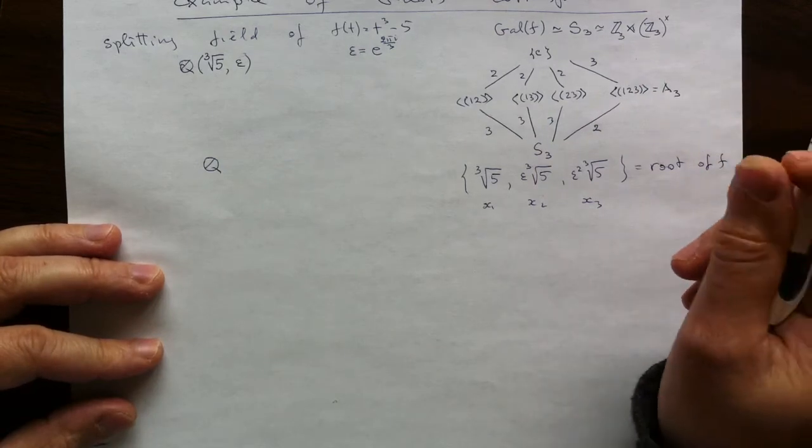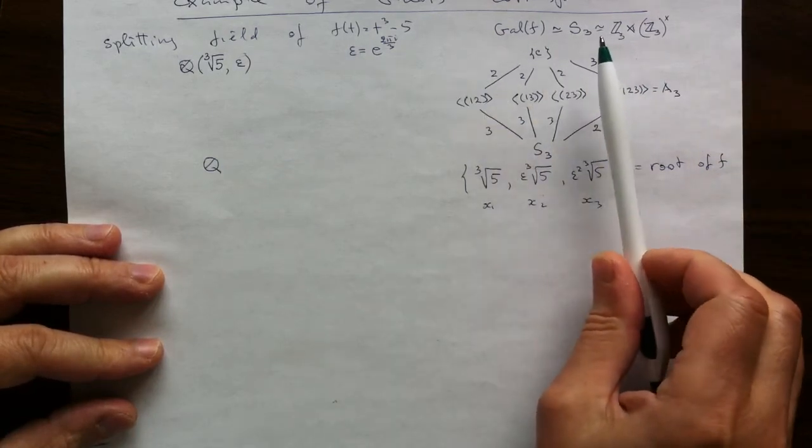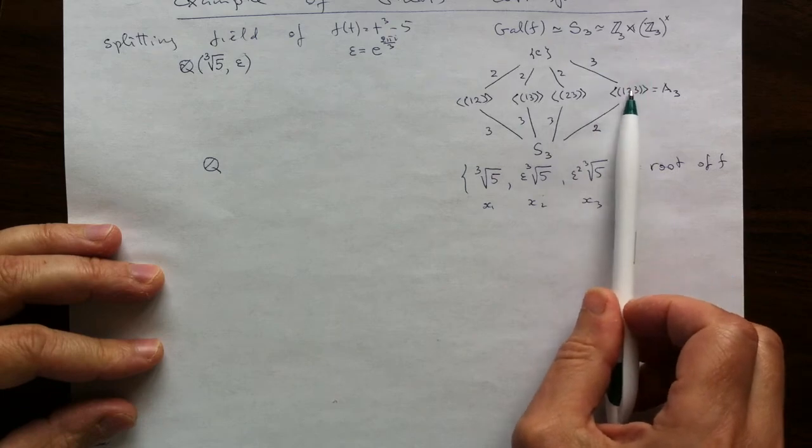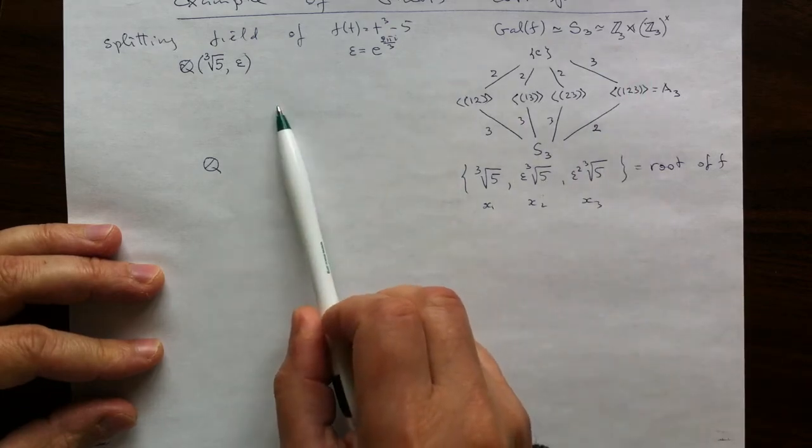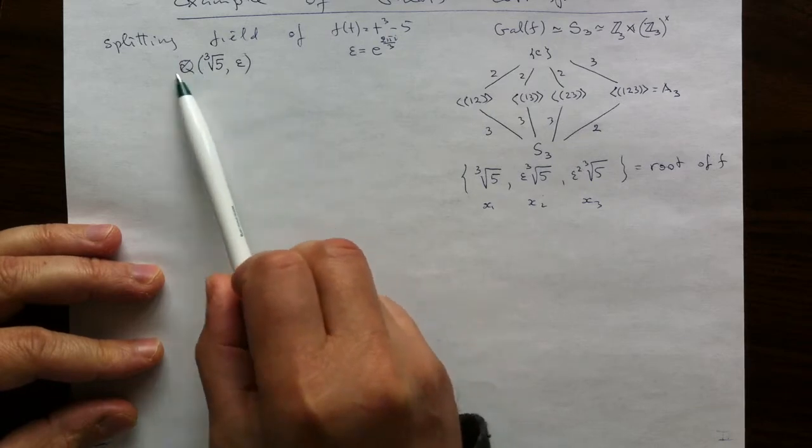Easy recipe, easy to say. According to Galois correspondence, you take a subgroup, and to compute its corresponding subfield, you just compute the invariants inside this field.